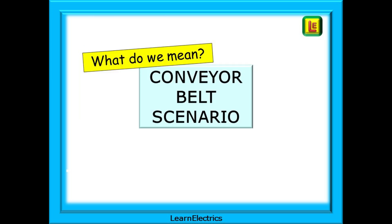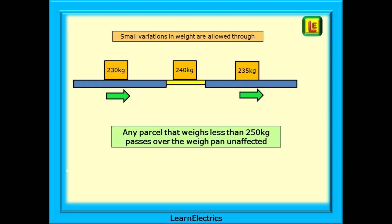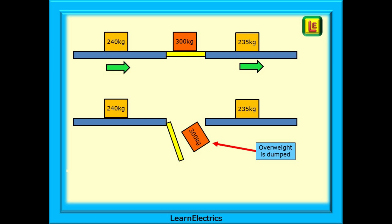What do we mean by shunting the surge voltage to earth? Let's use a conveyor belt scenario as an example. Imagine a conveyor belt passing parcels from one part of a warehouse to another. There is a limit on parcel weight, and any parcel weighing more than 250 kilograms must be removed from the line. Each parcel passes over a weigh pan that checks its weight. Any parcel under 250 kilograms passes through unaffected. When a 300 kilogram parcel arrives, the weigh pan detects it and in a flash dumps the overweight parcel off the belt. Just the same thing happens with an SPD — any overvoltage is dumped to earth.